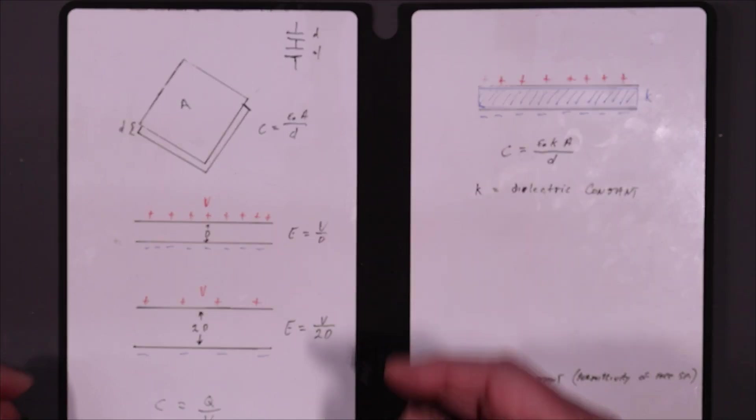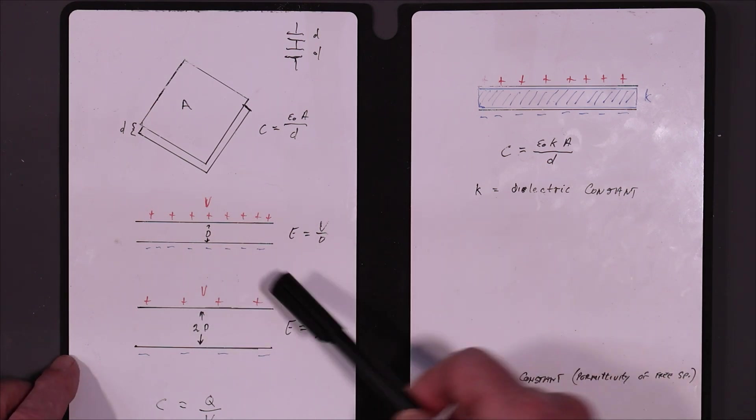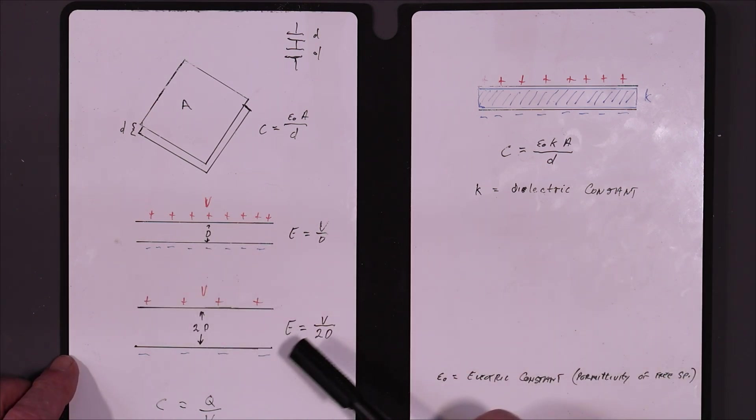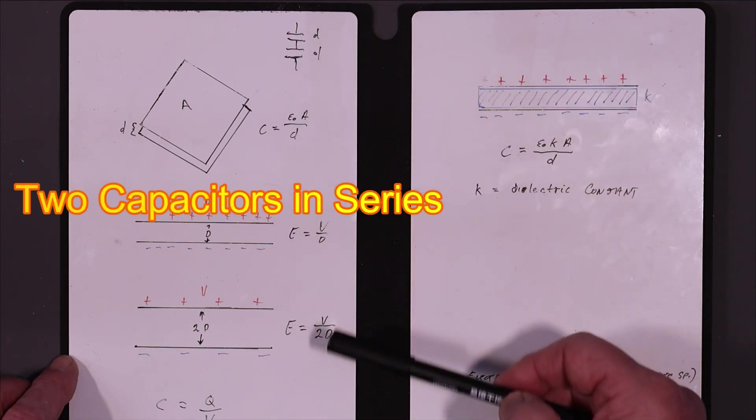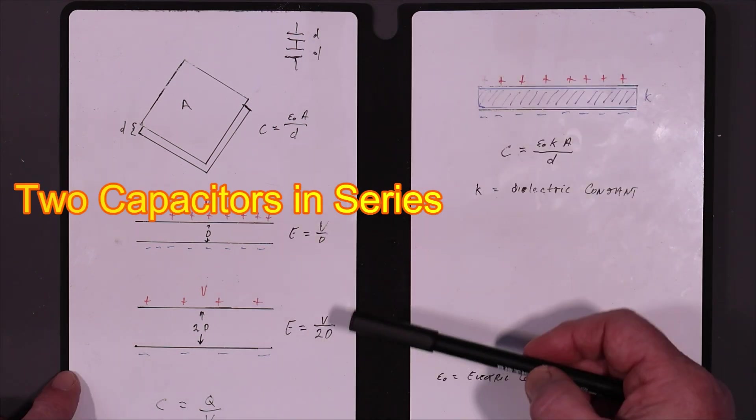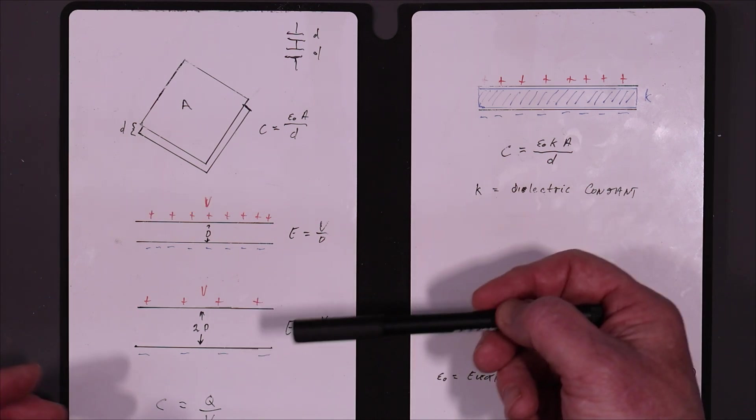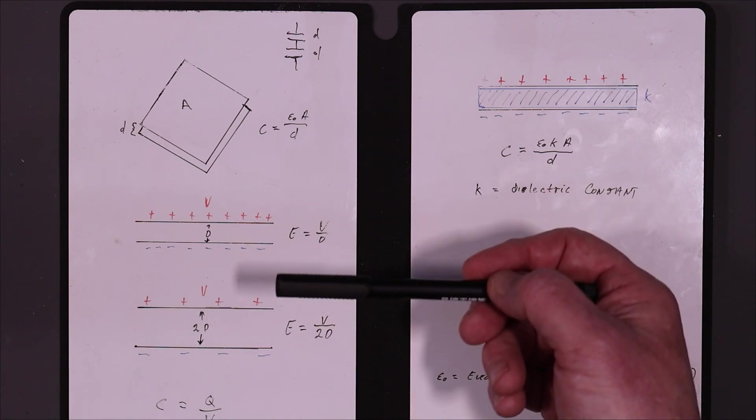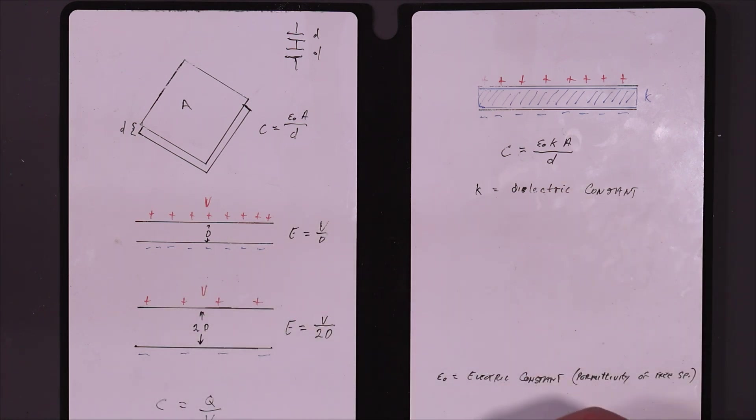If we look at the field between the two plates, it's equal to the voltage over the distance. If we put two plates in series, basically doubling the distance, then E equals V over 2D. Because the field is one half, you only need half as much charge to create that field. So to get the same voltage across it, half the amount of charge needs to be put onto the plate, so it's half the capacitance.